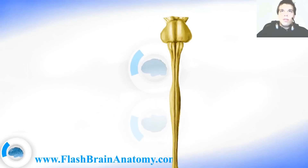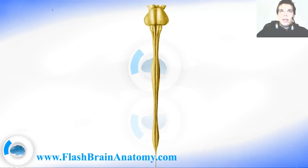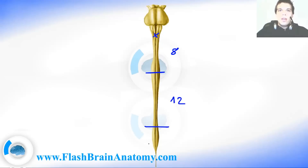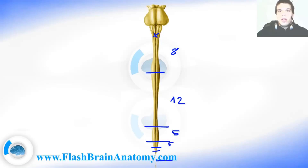To summarize the spinal cord: the decussation of the pyramids marks where it begins. Then we have the cervical part with 8 segments, the thoracic spine with 12 segments, the lumbar spine with 5 segments, the sacral part with 5 segments, and the coccygeal part. The terminal thread provides support and is composed of fibrous tissue.